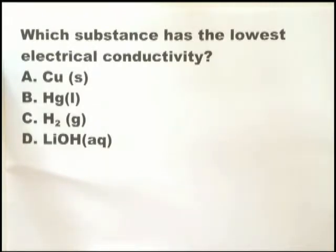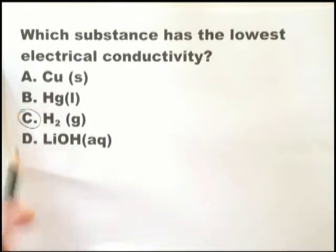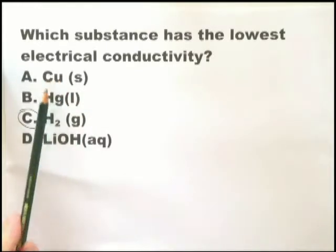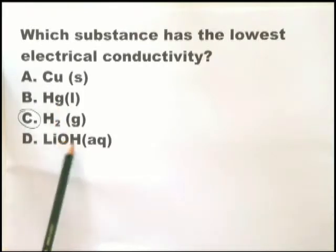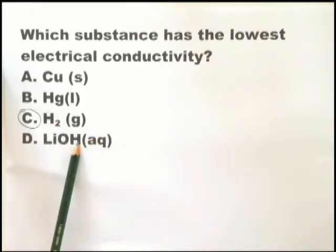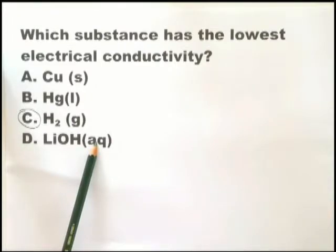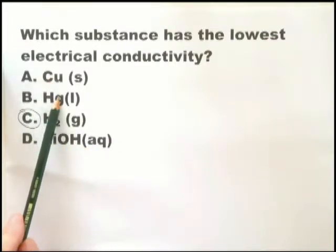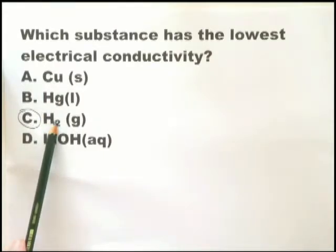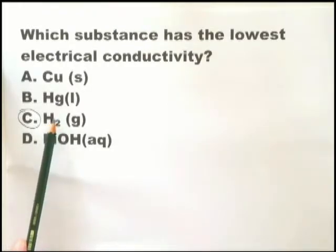Which substance has the lowest electrical conductivity? This is one of those questions where you should be able to answer it within five seconds. The only one that does not conduct electricity is hydrogen gas. Copper metal conducts electricity, mercury metal conducts electricity, lithium hydroxide aqueous conducts electricity. Anything that is aqueous — sodium chloride, sodium hydroxide, lead chloride — if it's aqueous, it conducts electricity. All metals conduct electricity. Any non-metal — hydrogen gas, nitrogen gas, oxygen gas, carbon dioxide gas, neon gas, helium gas — none of those conduct electricity.